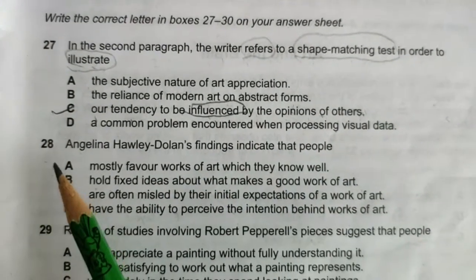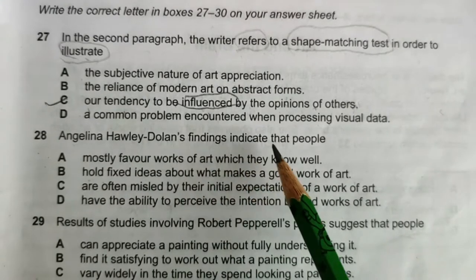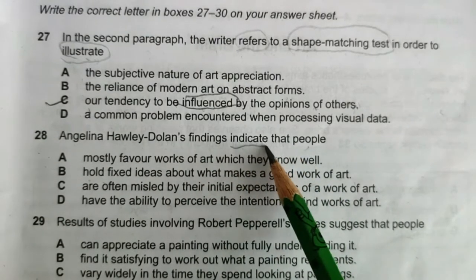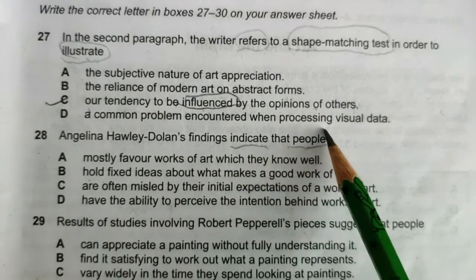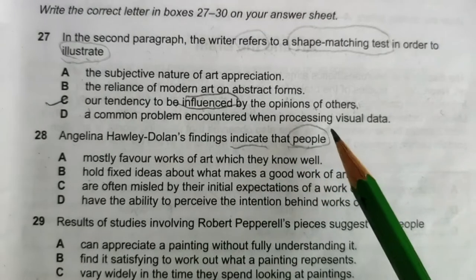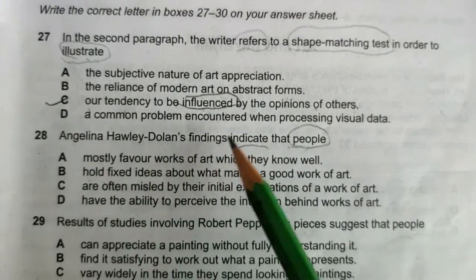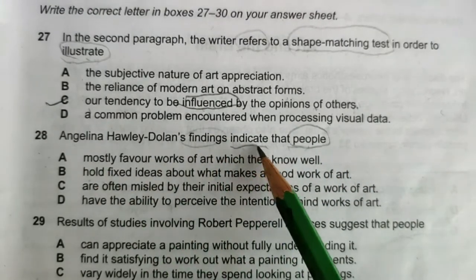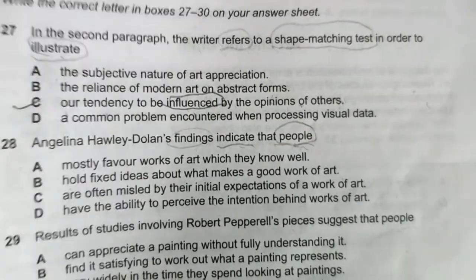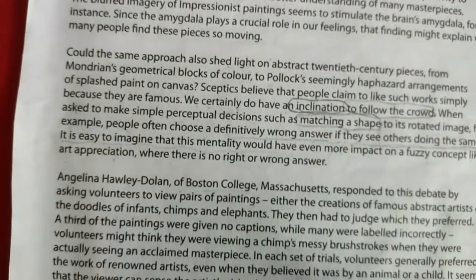Question 28: 'Angela Holl Dolan's findings indicate that people...' We go directly to the paragraph about Angela and look for the results of her findings.